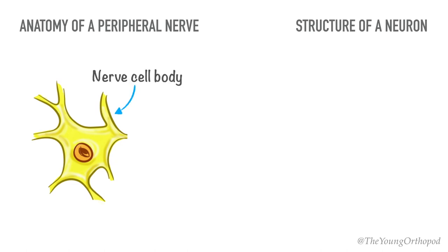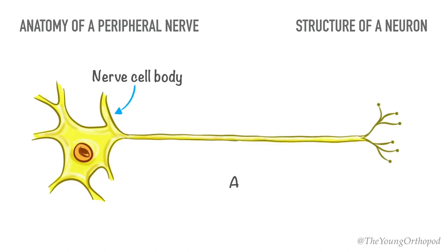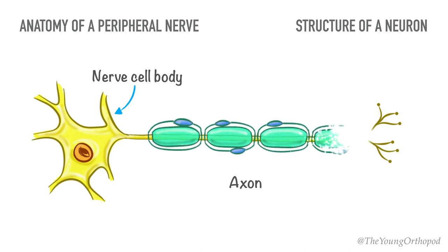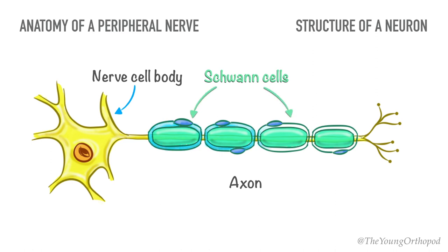The nerve fiber or axon is an extension of the nerve cell. The nerve fiber can be either myelinated or unmyelinated. In the myelinated fibers, the Schwann cell by rotation forms a multi-laminated structure that encloses a myelin sheath around a single axon.